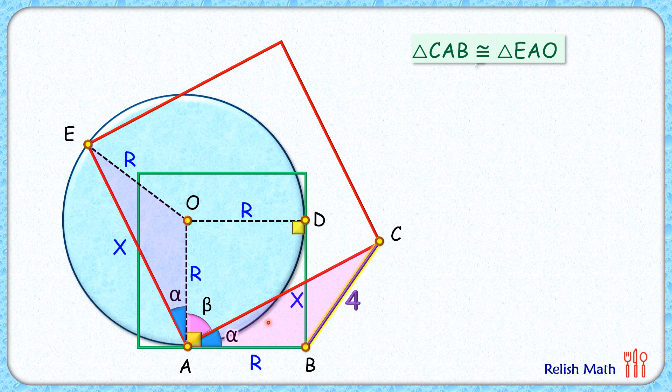As the triangles are congruent, thus the corresponding parts will be equal, or we can say that EO length will be equal to BC length. And thus your OE length, that is radius r, is nothing but 4 cm, and that's our answer.